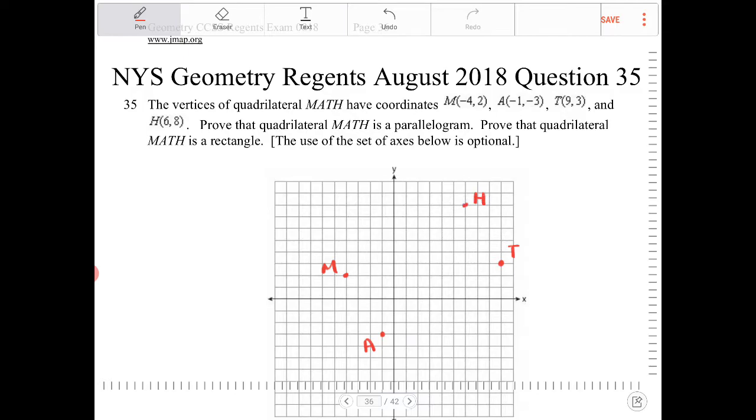And what do we have to do here? Prove that quadrilateral MATH is a parallelogram. This is the first thing we have to do. And then the second thing is, prove that quadrilateral MATH is a rectangle.